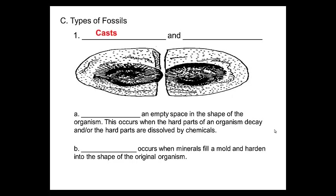Types of fossils. We have what are called casts and molds. A cast is an empty space in the shape of the organism. This occurs when the hard parts of an organism decay or are dissolved by chemicals, giving us an empty space in that shape — almost like leaving a footprint in wet sand. A mold occurs when minerals fill in and harden into the shape of the original organism — like pouring plaster of Paris into that footprint, which gives you the shape of what your foot was.